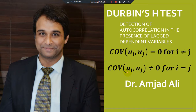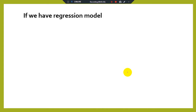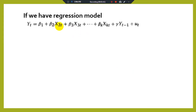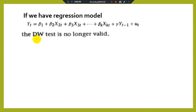If we have a regression model like Y_t equals beta_1 plus beta_2 X_2t plus beta_3 X_3t and so on, with additional independent variables, but here we also have the lagged value of the dependent variable as an independent or explanatory variable — this is known as a lagged dependent variable. We know that in the presence of the lagged dependent variable, we cannot apply the Durbin-Watson test.